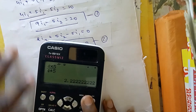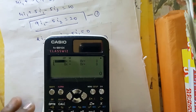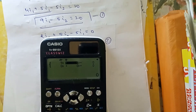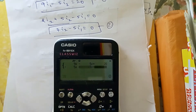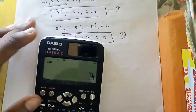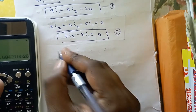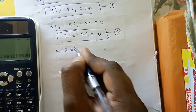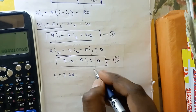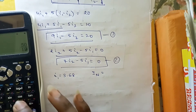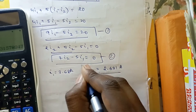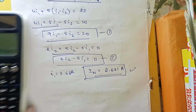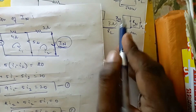With two equations and two unknowns, we solve: 9·I1 − 5·I2 = 20 and −5·I1 + 7·I2 = 0. Solving these, I1 = 3.68 A. The Norton's current In = I2 = 2.631 amperes. So In = 2.631 A and Rn = 4.22 ohms have been found.